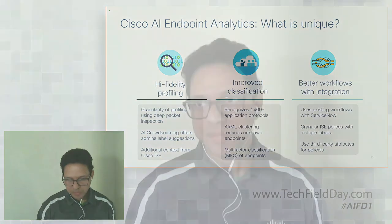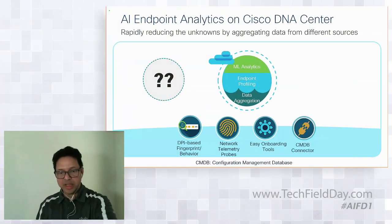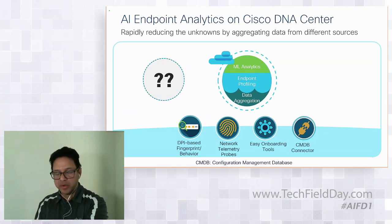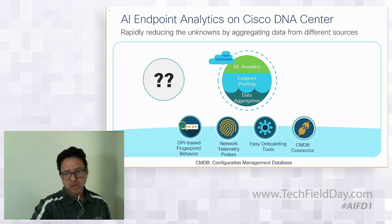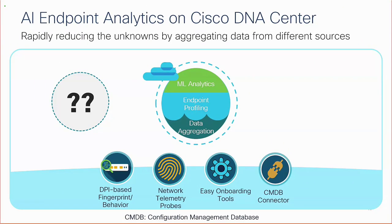Question from the audience: 'You talked about device profiling and label classification, including during registration. If you're doing packet and traffic inspection, that happens at runtime after the device is on the network — but how are you able to identify a device before traffic starts coming in?' Let me explain how it works using this slide. We have several data sources: DPI, ISE probes, onboarding tools, and a CMDB connector — in this case ServiceNow. All of this data is aggregated, endpoints are profiled, and unprofiled endpoints are funneled into ML analytics.